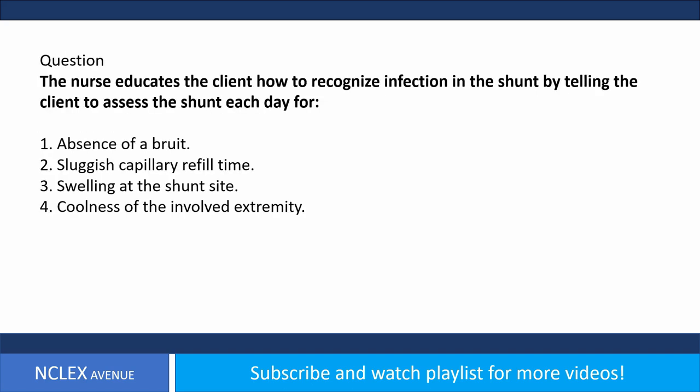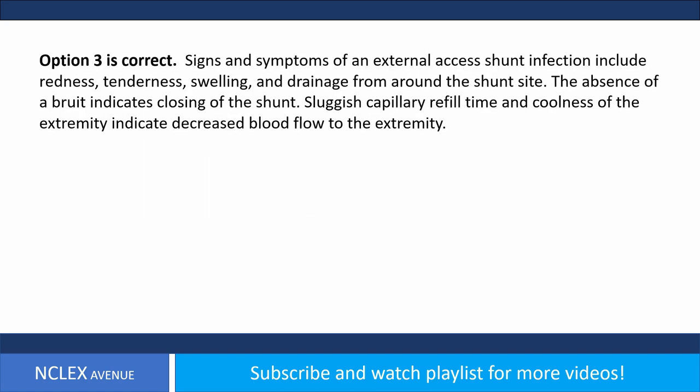Question. The nurse educates the client how to recognize infection in the shunt by telling the client to assess the shunt each day for: 1. Absence of a bruit. 2. Sluggish capillary refill time. 3. Swelling at the shunt site. 4. Coolness of the involved extremity. Answer. Option 3 is correct. Signs and symptoms of an external access shunt infection include redness, tenderness, swelling, and drainage from around the shunt site. Absence of a bruit indicates clotting of the shunt. Sluggish capillary refill time and coolness of the extremity indicate decreased blood flow.